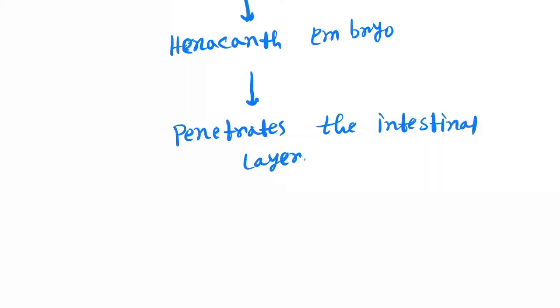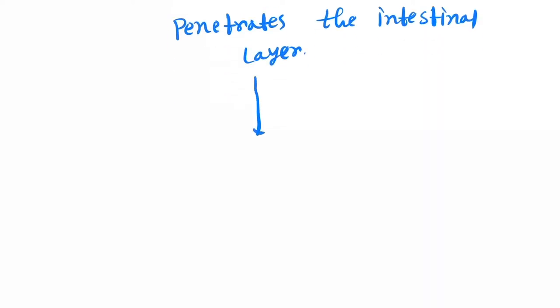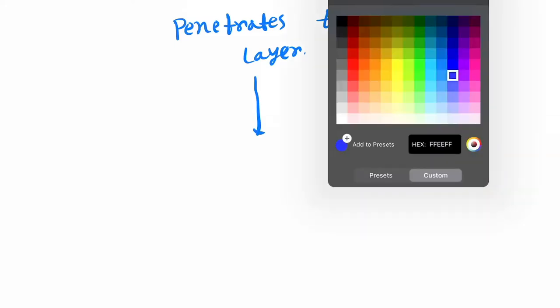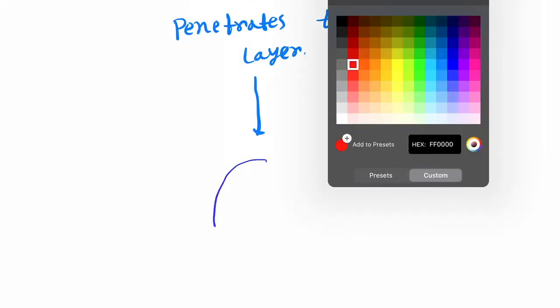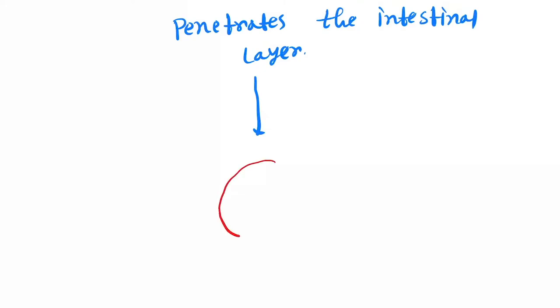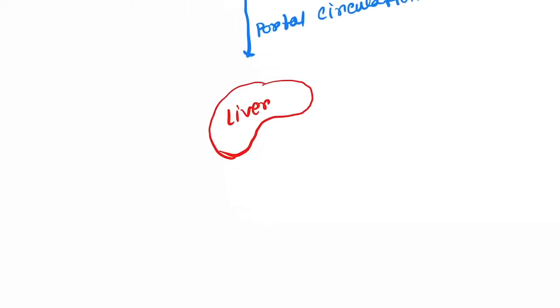Next, via the portal circulation, it goes to the liver. From liver it goes to the IVC by the portal vein and to heart, and then it goes to the lungs. The next organ is the lungs where 10 to 20 percent will get affected there.